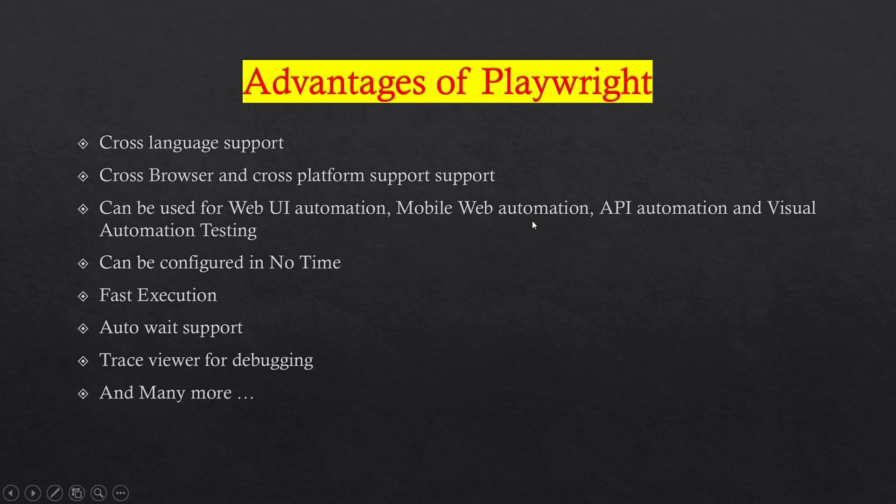So what is Playwright? Playwright is an automation tool and it can be used for web UI automation, mobile web automation, API automation, and visual automation testing. It has very good language support — you can write tests in Java, JavaScript, TypeScript, Python, and C# .NET.